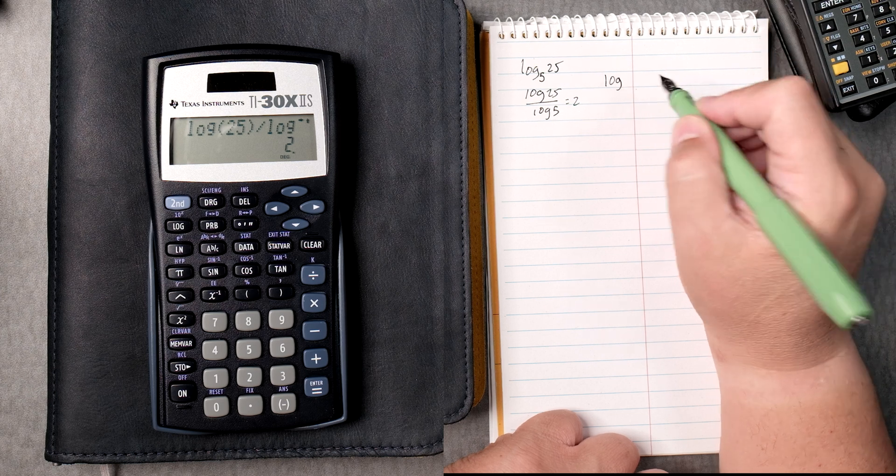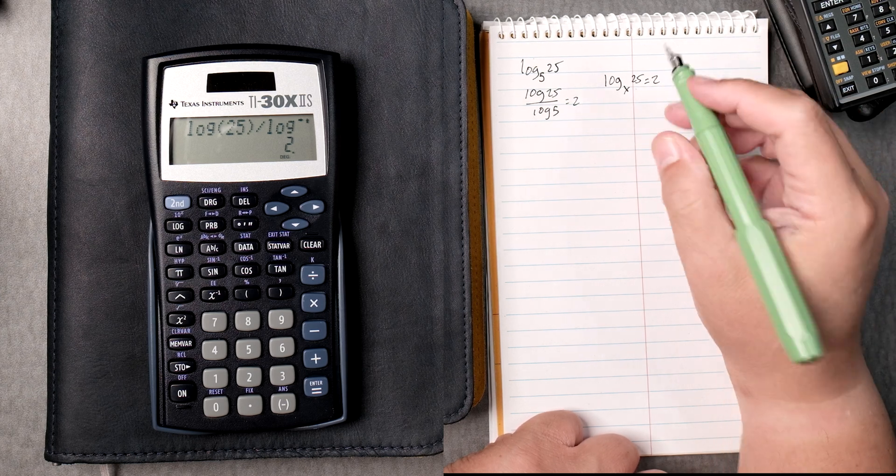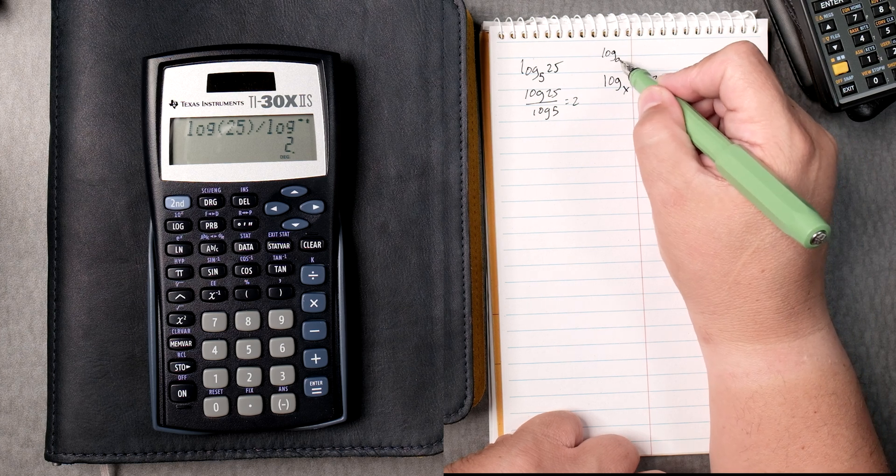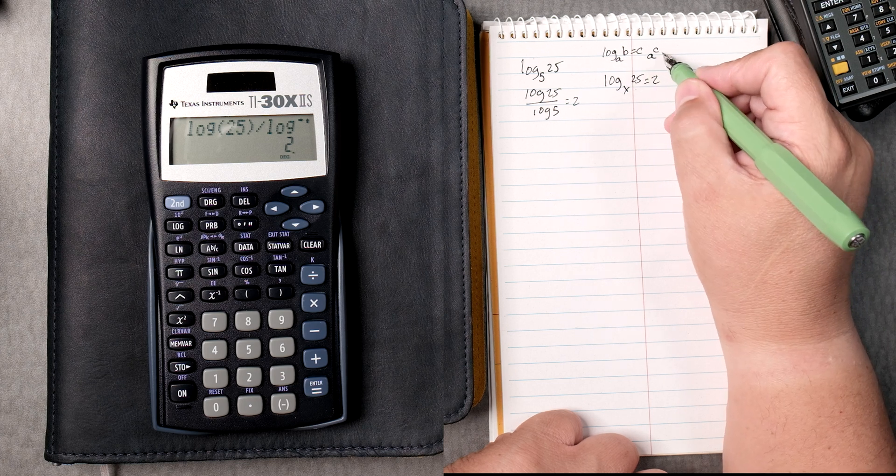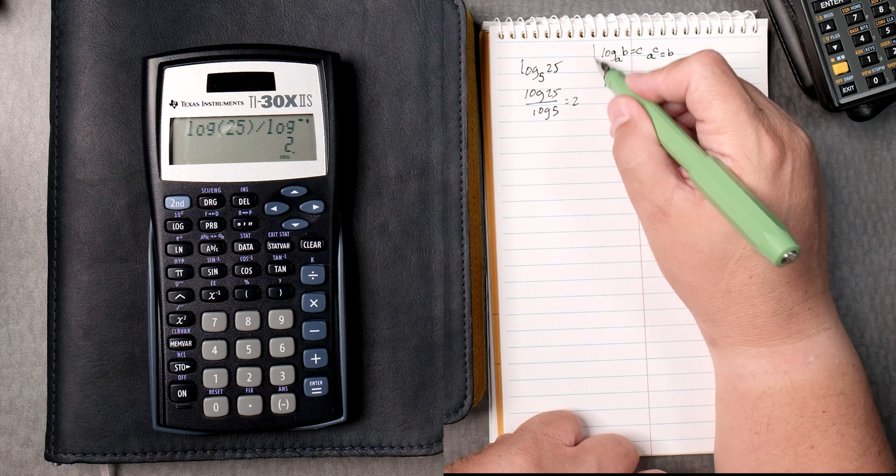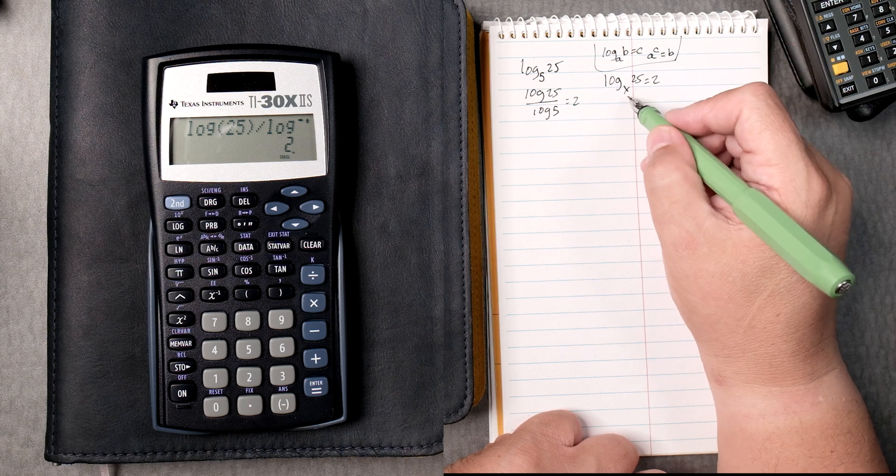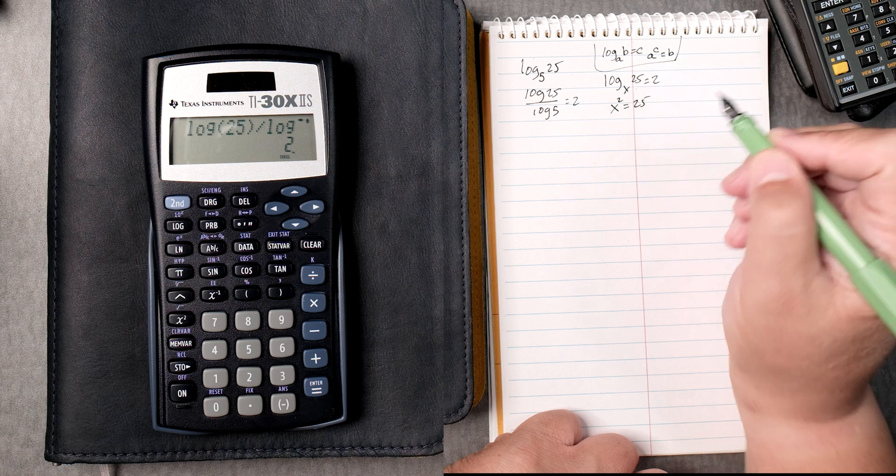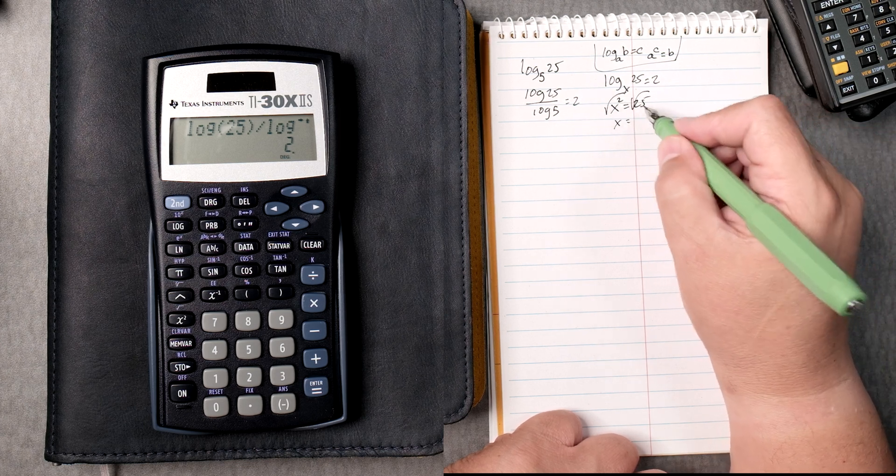Let's say you have the log of base x, 25, equals 2. There's a rule that says that the log of a, b, equals c. It's the same thing as a to the c equals b. Good law to remember. So here, x to the second power equals 25, and then we take the square root on both sides. x equals the square root of 25.